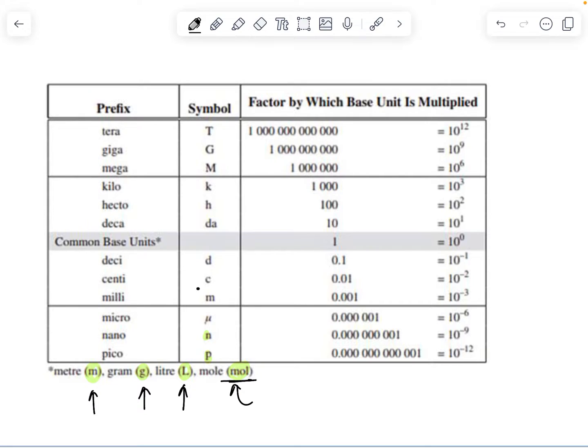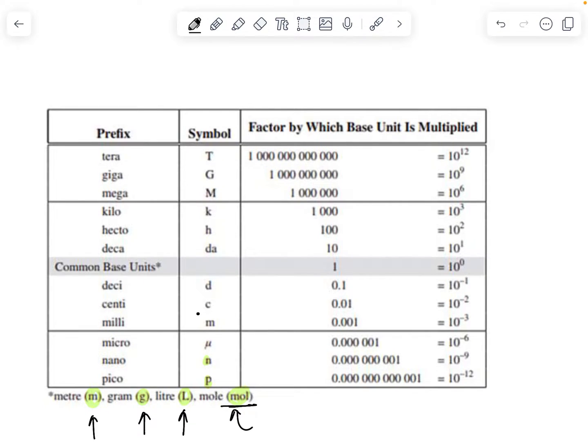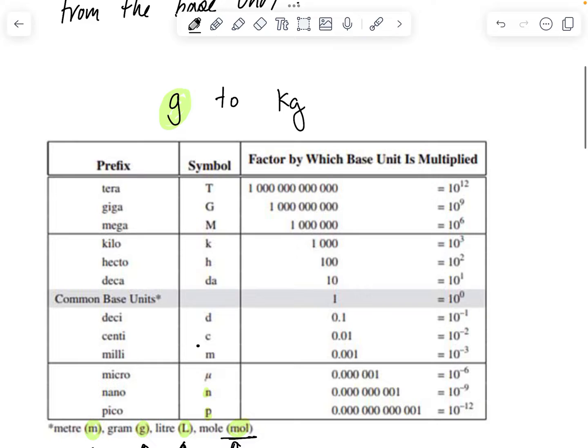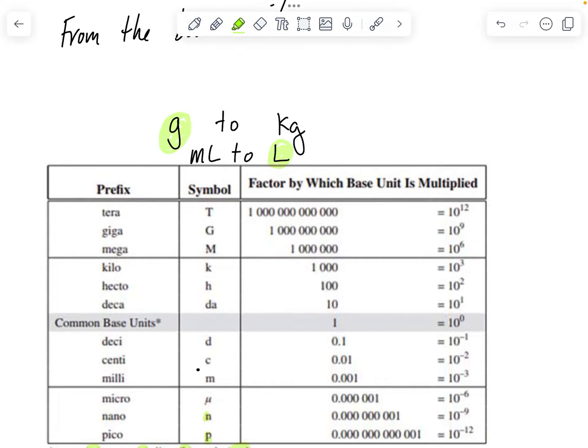Mole has got three letters in the name. But if it was a base unit, it might be something like grams to kilograms. The base unit has got the one letter. Or if I had milliliters to liters, the base unit is the liters. And so that's going to the base unit, whereas grams to kilograms is going from the base unit.